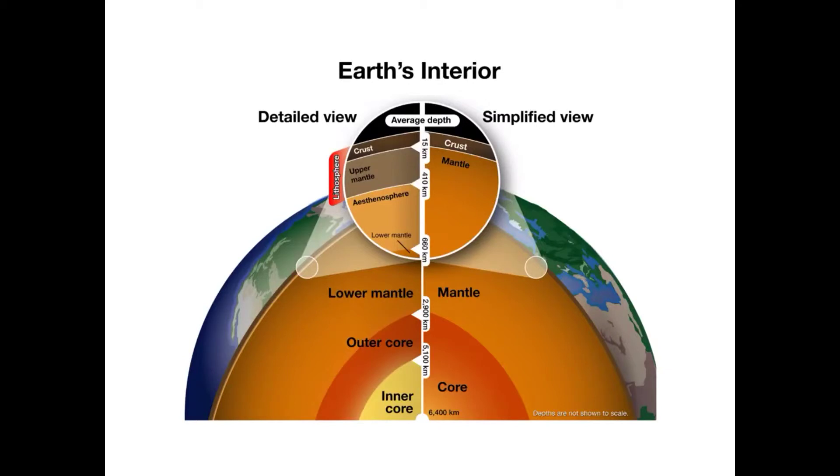Also, using S wave data, seismologists have determined that the outer core is liquid iron. Since S waves are not able to pass through liquids, they create an S shadow.